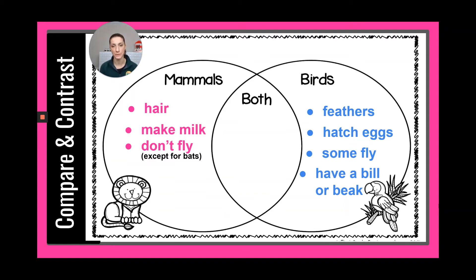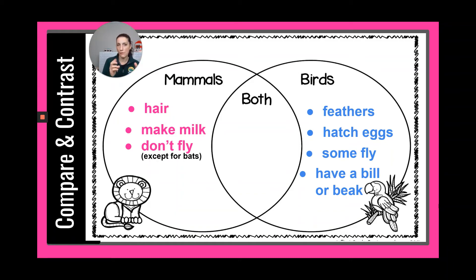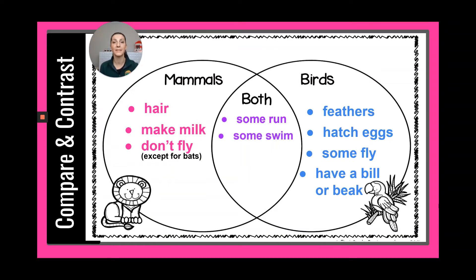Pause if you need to. Now let's talk about things they both have in common — the comparing part. The first shared trait involves how they move. Some mammals run and some mammals swim, and the same is true for birds. Some birds run — ostriches run — and some birds swim, like penguins. So both groups: some run, some swim.